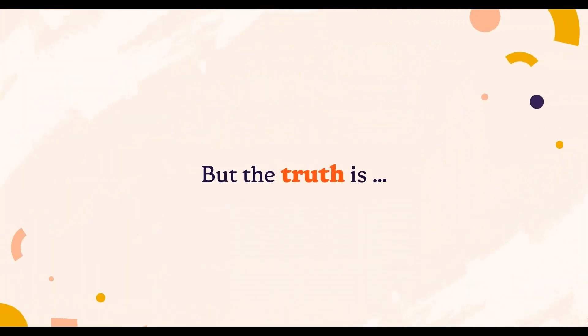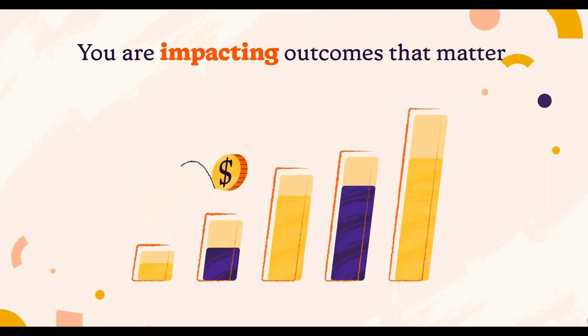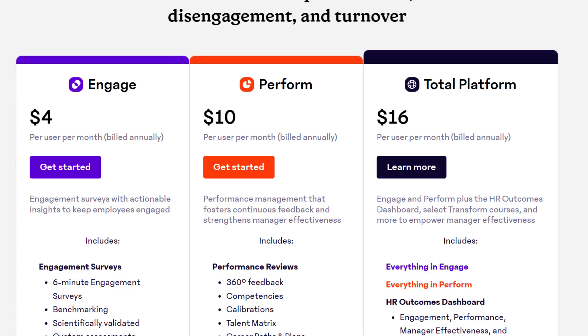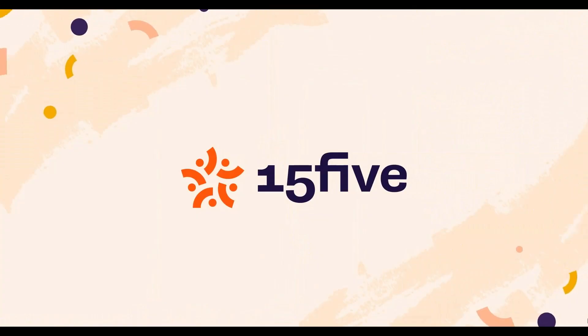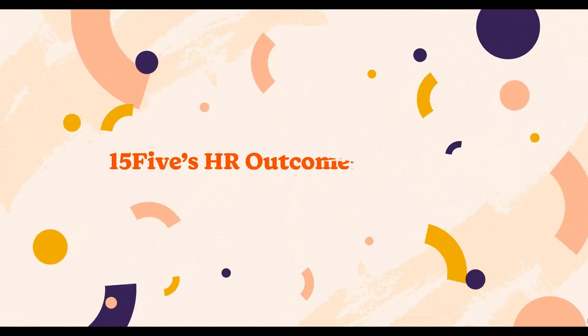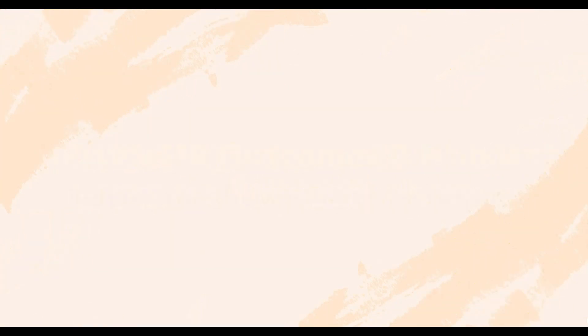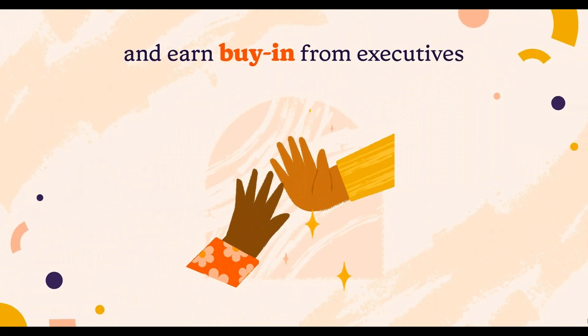If you want to put everything together from the Engage and Perform plans, then you should go for the Total Platform, which is $16 per user monthly, billed annually. It comes with everything in the previous two plans alongside some other features, such as an HR outcomes dashboard that you can integrate into your favorite HRIS system, manager effectiveness indicators, and microlearning.